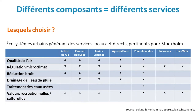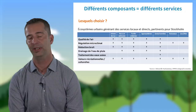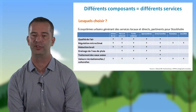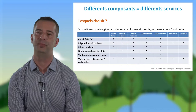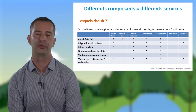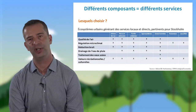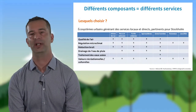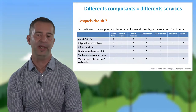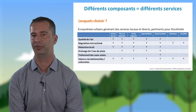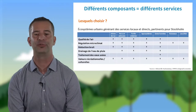On peut noter également que le service écosystémique du traitement des eaux usées va être rendu uniquement par les zones humides. Donc, si l'on veut piloter vers ce service, on devra intégrer des zones humides dans le tissu urbain. Lesquelles choisir ? Est-ce qu'on prend seulement les zones humides parce qu'elles rendent beaucoup de services ? Mais peut-on également vouloir panacher entre ces différents écosystèmes ? Ce sont des choses qui ne sont pas simples.